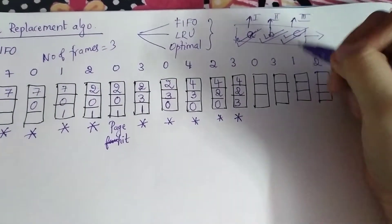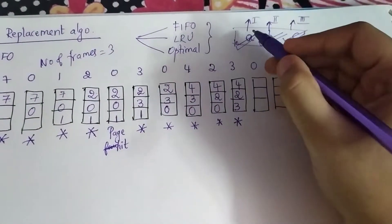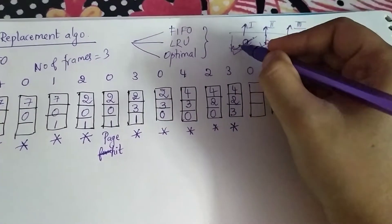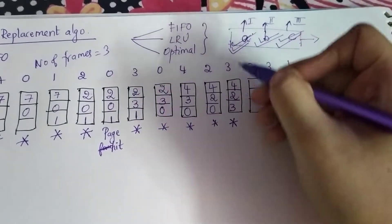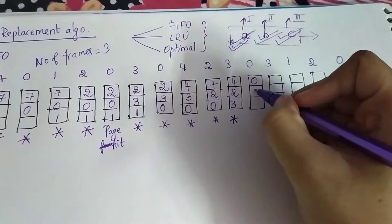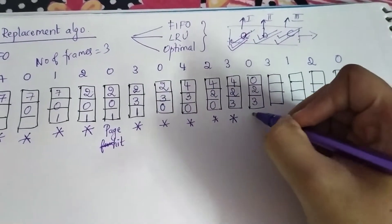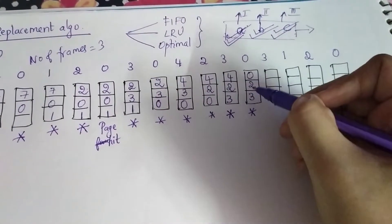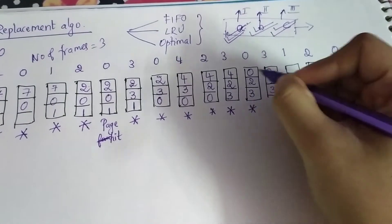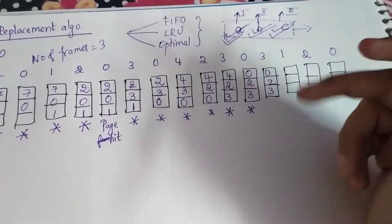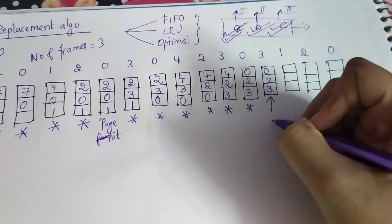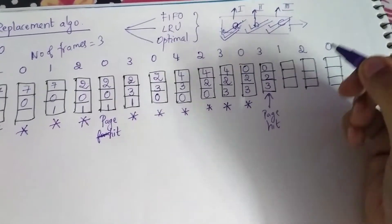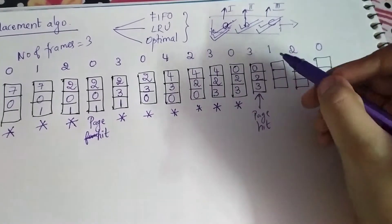Now you have to add zero. All blocks have two tick marks, so you move to the third tick, starting from the first block. You add zero there and you have two and three — this is also a page fault. Now you have three, but three is already existing, so write it again the same way — this is a page hit.